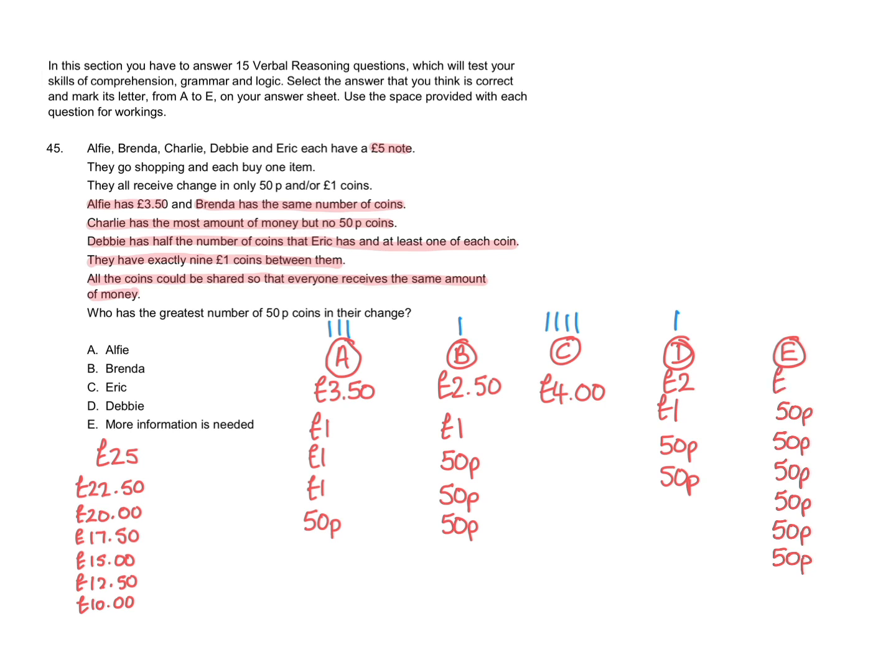This gives Eric a total of £3.50. If we now add all of those amounts together £3.50 plus £2.50 is £6. A further £4 gives £10. A further £5 gives £15 and we know that that's one of the amounts of money. If we share the coins out each person would receive £3 as there is £15 altogether.